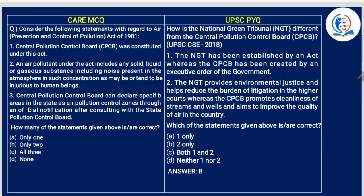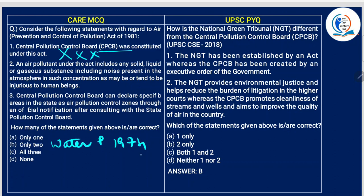Consider the following statements with regard to the Air Prevention and Control of Pollution Act of 1981. Statement: Central Pollution Control Board CPCB was constituted under this Act. No — you have to be very careful here. The Water Pollution Act of 1974 actually constituted the CPCB. The Air Pollution Act later expanded its functions.